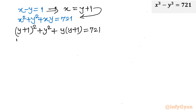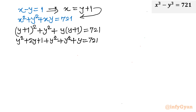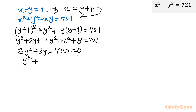Expanding: y² + 2y + 1 + y² + y² + y = 721. Simplifying, we get 3y² + y - 720 = 0, which is a quadratic equation. We will use factorization to solve it.